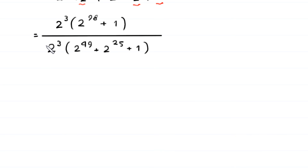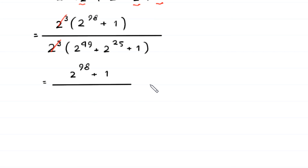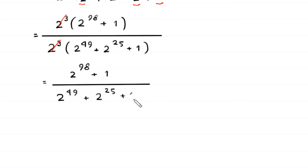Now, the 2 cubed in the numerator and the 2 cubed in the denominator cancel each other out. We are left with 2 to the power 98 plus 1 divided by 2 to the power 49 plus 2 to the power 25 plus 1.